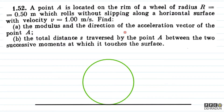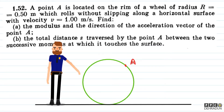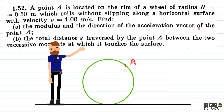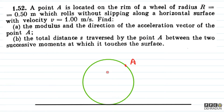Point A is located on the rim of the wheel. Here we have radius R and velocity V. Since the wheel is rolling without slipping, this means V = Rω.